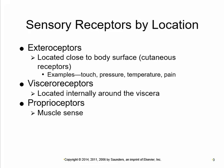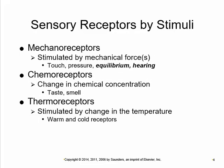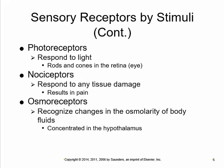We can have exteroceptors, which are monitoring what's happening outside of the body. There are visceral receptors that are inside the body. There are proprioceptors for body position — in the muscles and joints. We can look at receptors by type of stimuli: mechanoreceptors, chemoreceptors, thermoreceptors, photoreceptors — which is what this topic is about — nociceptors for pain, and osmoreceptors for osmolarity.